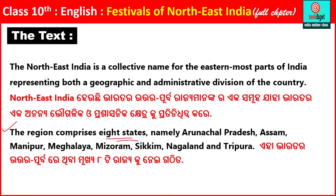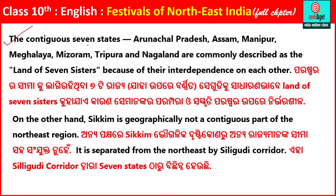The region comprises eight states, namely Arunachal Pradesh, Assam, Manipur, Meghalaya, Mizoram, Sikkim, Nagaland, and Tripura. These eight states make up Northeast India. The contiguous seven states — Arunachal Pradesh, Assam, Manipur, Meghalaya, Mizoram, Tripura, and Nagaland — are commonly described as the Land of Seven Sisters.